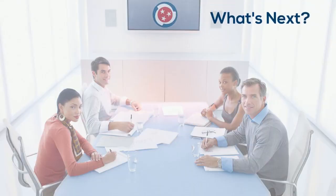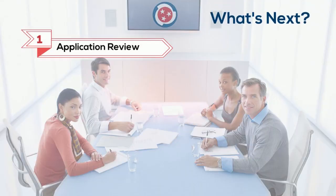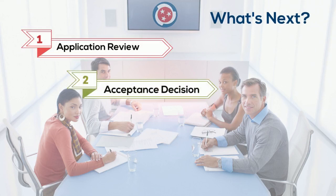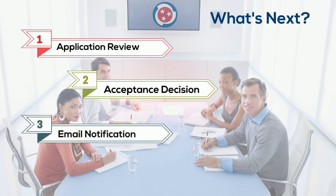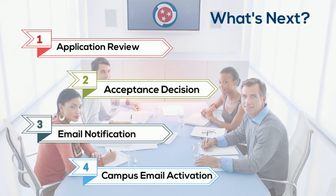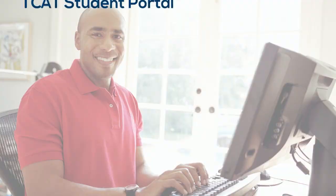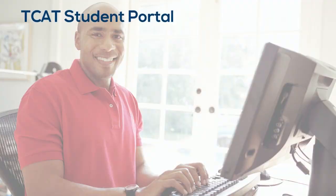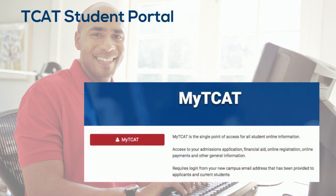So what's next? TCAT staff will review your application. If all admissions requirements are met, a decision code will be added to your application. You'll then receive an email about your acceptance. A second email will be sent with instructions on activating a campus email address for future communications. After you receive your TCAT email address, you'll be able to access the TCAT student portal for information about your application, financial aid, orientation, and other events and activities.